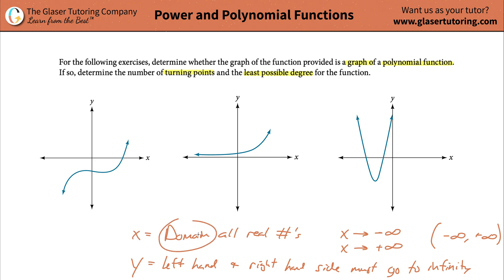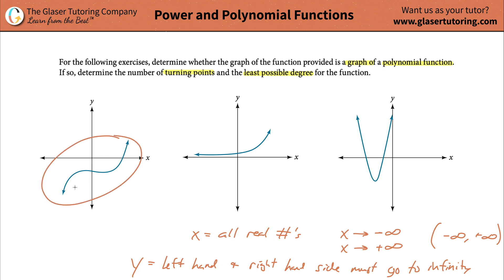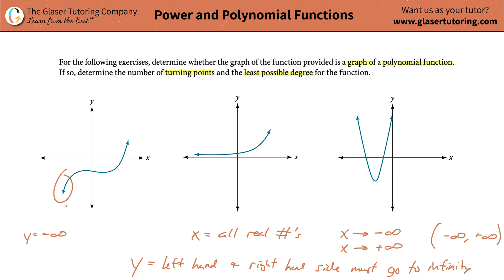You can just write all real numbers - the x values have to be all real numbers, all the way from negative to positive. Now for the y, the left hand and the right hand side must go to infinity. Take a look at this graph. Where's this thing headed? Headed way down forever and ever - so it's going to negative infinity in the y direction. This side has to go to some infinity - I don't care if it's negative or positive, it has to go to infinity somehow. On the right hand side of the graph, it's going to go on and on and on all the way up to positive infinity. This function satisfies both conditions.